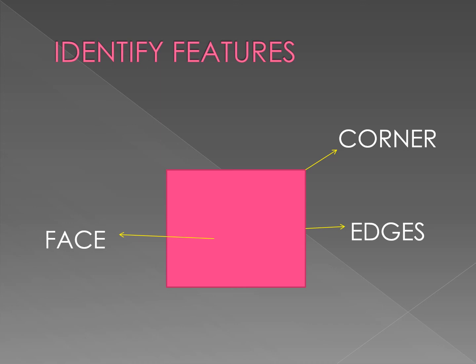A corner is where two lines meet. Edges are the sides — how many sides there are. A face is how many faces are in front of each side; a face is shown in front of each side.